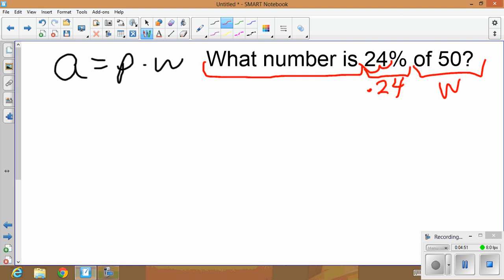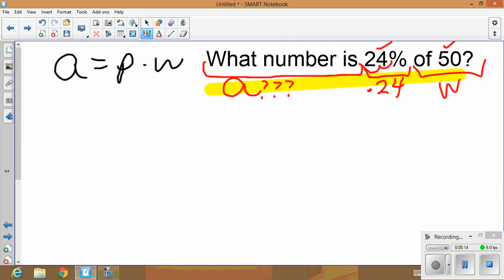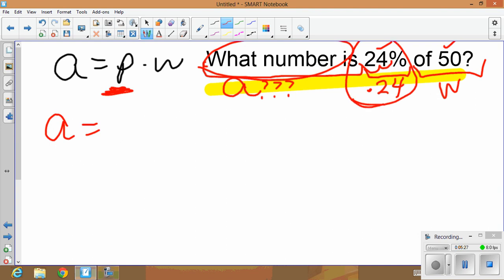Of 50, meaning out of 50, what is the number of questions I got correct? So 'of' is my w, it's the whole. So I am looking for a. a is the piece that's missing, or the part. So how many questions—it's asking, how many questions did you get right out of 50 to get a grade of 24? So we're going to take all this information that we just discovered, and we're just going to plug it into the formula. So this is how we do it. I don't know a because it's saying what number, so a equals—I need the percent.